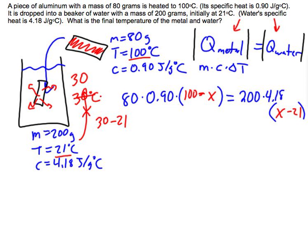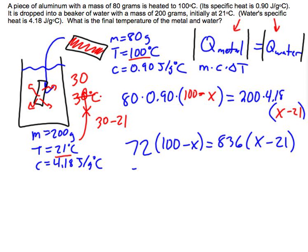At this point, it's just an algebra problem. Once we get this set up, it's just a matter of solving for x. So if I do that, 80 times 0.9, I get 72 times 100 minus x, and that equals 200 times 4.18 which gives me 836 times x minus 21. Now I'm going to distribute. So 72 times 100 is 7200 minus 72x, and that's going to equal 836x minus 17,556.